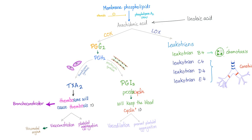They come from the membrane phospholipid of the endothelium or the platelet, depending on the case. The platelets form thromboxane A2 to vasoconstrict and increase platelet aggregation. If this is the endothelium, form prostaglandin I2, prostacyclin, to keep the blood cycling by vasodilation and preventing platelet aggregation.